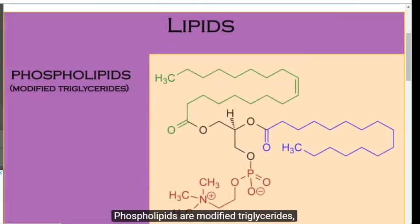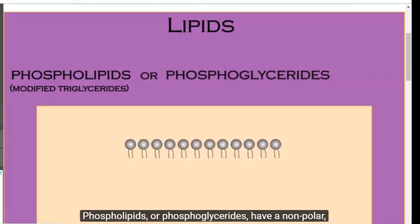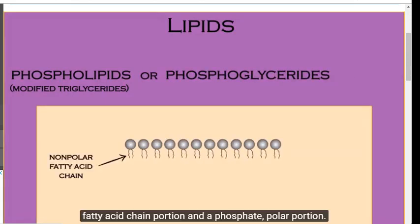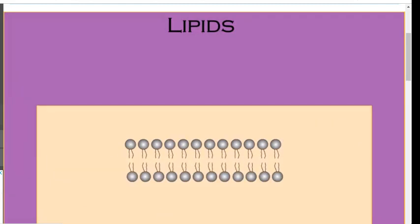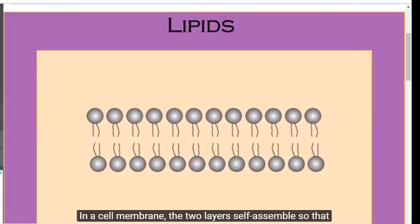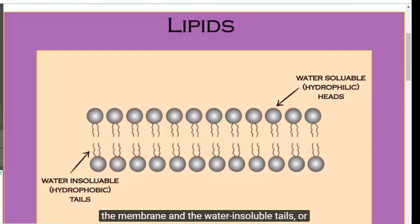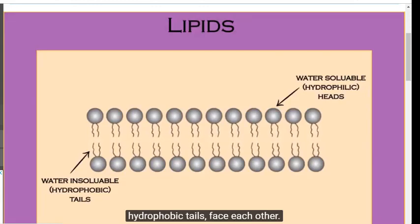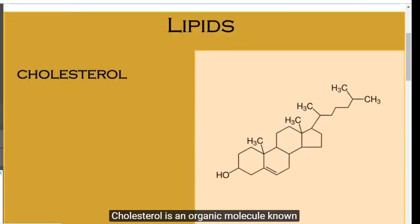Phospholipids are modified triglycerides, where a phosphate group replaces one of the fatty acid chains. Phospholipids, or phosphoglycerides, have a nonpolar fatty acid chain portion and a phosphate polar portion. Two layers of phospholipids are the chief component of all cell membranes. In a cell membrane, the two layers self-assemble so that their water-soluble heads, or hydrophilic heads, form the surface and interior of the membrane, and the water-insoluble tails, or hydrophobic tails, face each other.